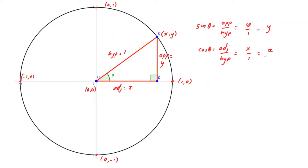Cosine theta is adjacent over hypotenuse. The adjacent side is x, so that's x over 1, which is just x. So x gives us the value of cosine theta. Tan theta is opposite over adjacent, which is y over x. We need to be careful here — x must not equal 0, because we can't divide by 0, so that will be a problem.